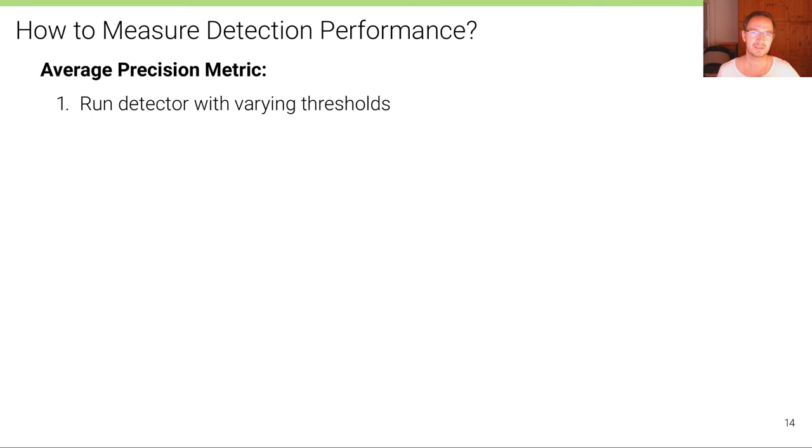So how does this metric work? In the first step, we run the detector with varying thresholds. This is where we basically search through a whole range of these thresholds, starting with the thresholds where no object is returned to a range where a lot of boxes are returned.